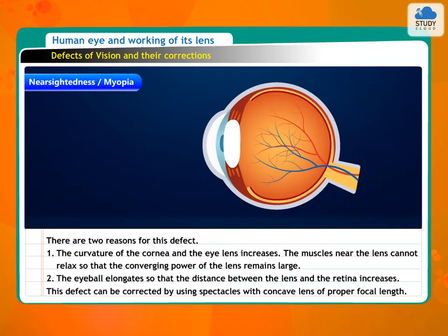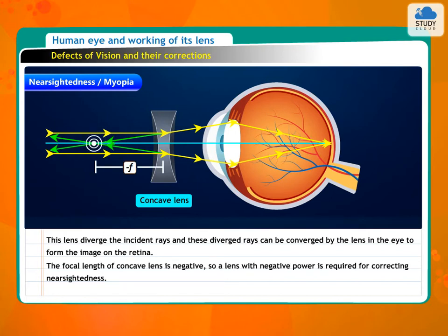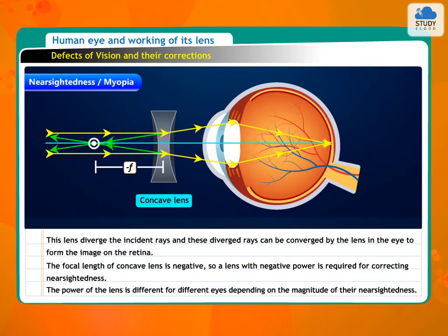This defect can be corrected by using spectacles with a concave lens of proper focal length. This lens diverges the incident rays, and these diverged rays can be converged by the lens in the eye to form the image on the retina. The focal length of a concave lens is negative, so a lens with negative power is required for correcting nearsightedness. The power of the lens is different for different eyes depending on the magnitude of their nearsightedness.